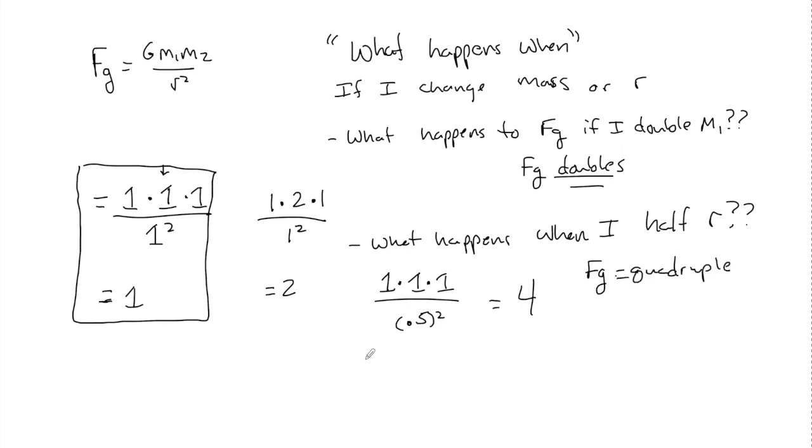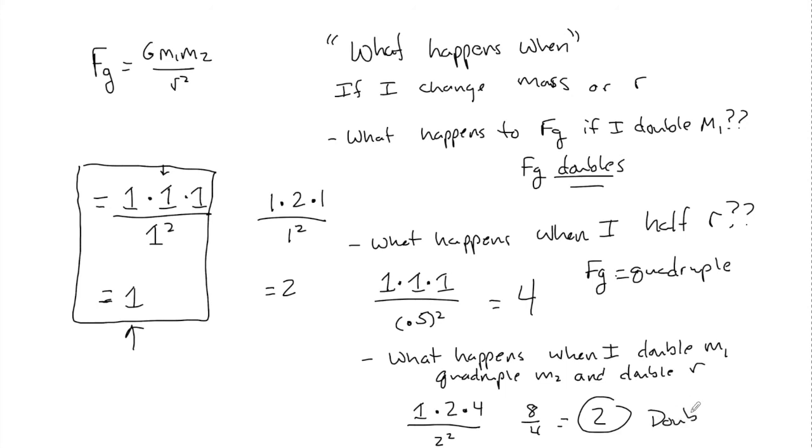And sometimes they'll even change two variables. What happens if I double M2, I quadruple M1 and I double R? So now what I'm going to do is I'm going to set up, I have my initial condition of one. What I'm going to do is I'm going to keep G the same. They want me to double M1 to two. They want me to quadruple M2 to four. And then they want me to double R to two and I have to square that. So one times two is two. Two times four is eight over four. We'd see that that relationship is only going to double F_g.